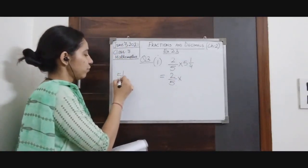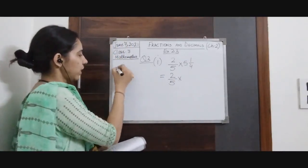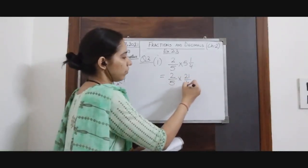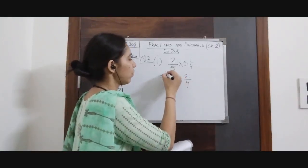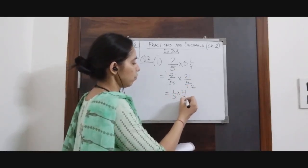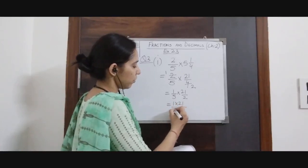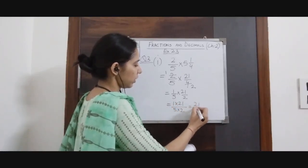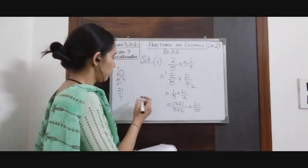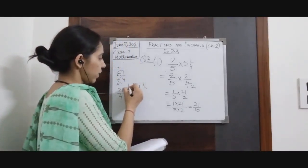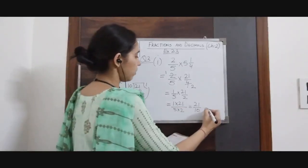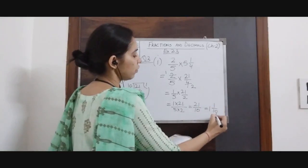4 × 5 = 20, 20 + 1 = 21, so we get 21/4. Cancellation: we can cancel 2 from numerator and 4 from denominator to get 1/5 × 21/2. Product of numerators divided by product of denominators gives 21/10. Our answer is in improper form, so we convert it to mixed form: 21 ÷ 10 gives 2 remainder 1, so the answer is 2 and 1/10.